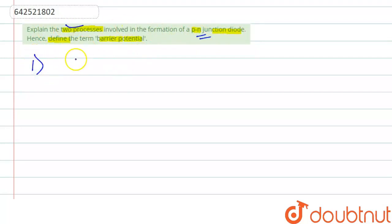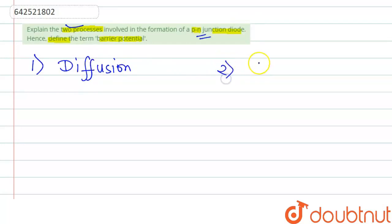If we talk about the PN junction diode, the two processes involved are: first, diffusion, and the second is drift.